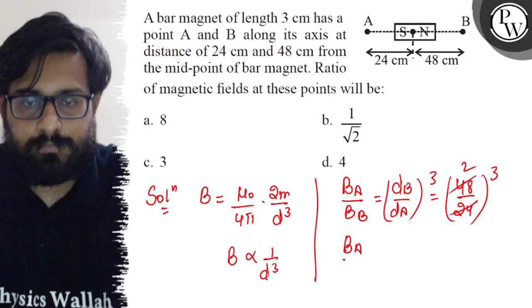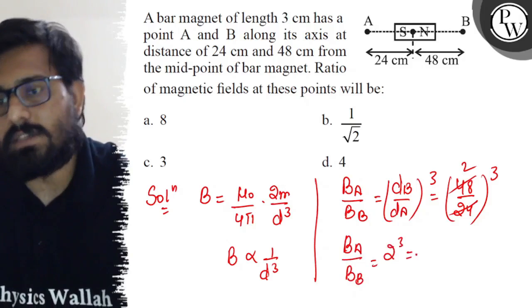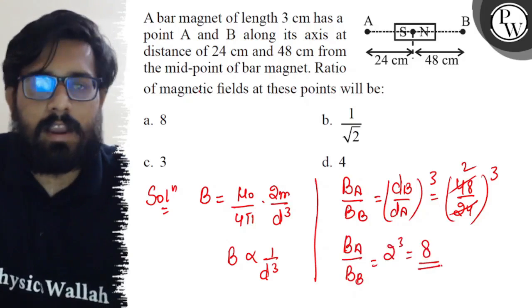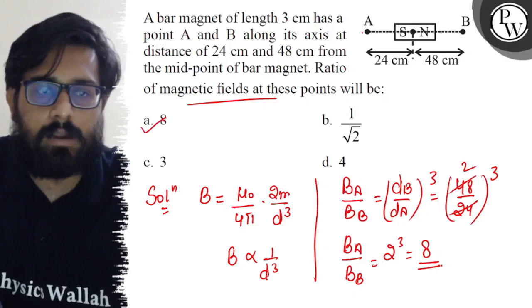So B_A upon B_B comes out with 2 raised to power 3, which is nothing but equals to 8. So the ratio of the magnetic field at these points A and B comes out to be nothing but 8.